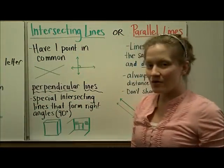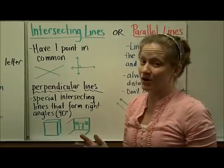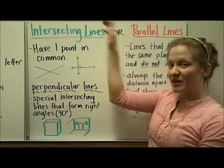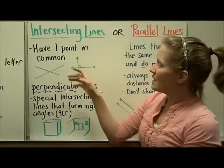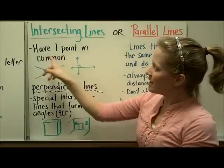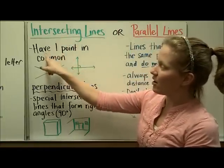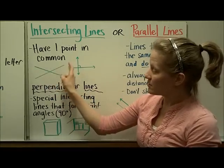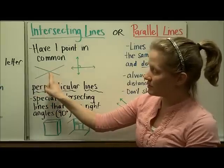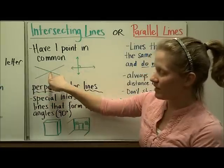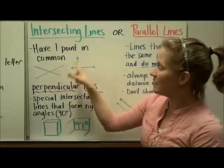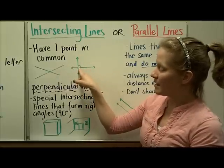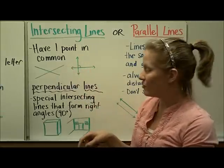You have to know that all lines are either intersecting or they are parallel — they can't be both. Every pair of intersecting lines always has one point in common. Here are two intersecting line segments, and you can see the one point where they are intersecting. Here are two intersecting lines intersecting at that one point.